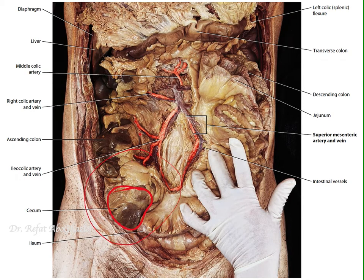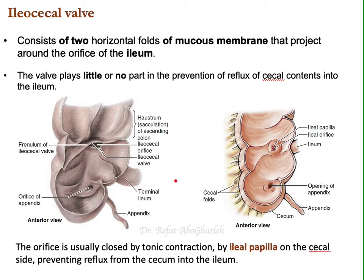Look at the haustra of the large intestine and the omental appendices. Now let us remove the anterior wall of the cecum and open it to see what's inside. Most interestingly, we mentioned that the terminal part of the ileum opens into the posterior medial wall of the cecum — that is what we call the ileocecal valve.